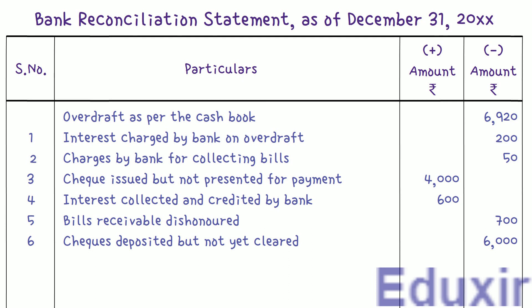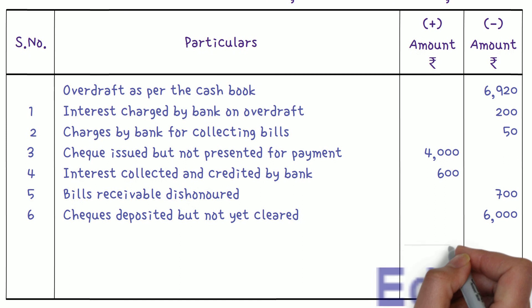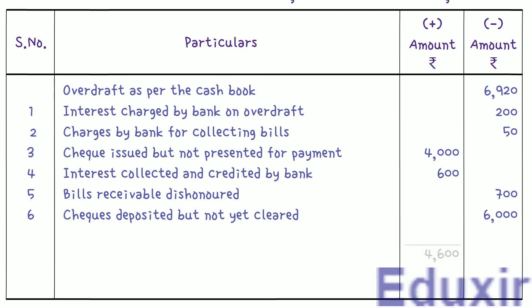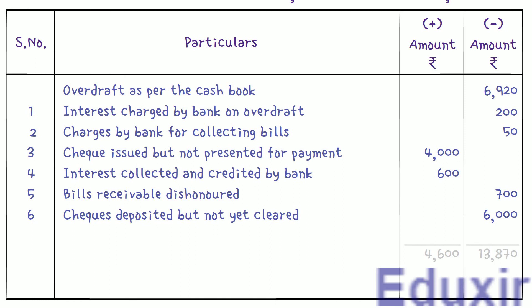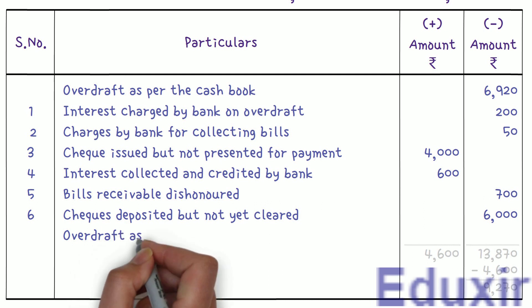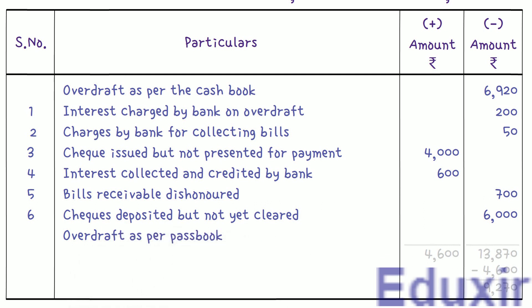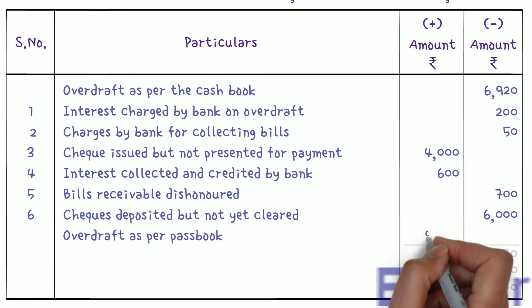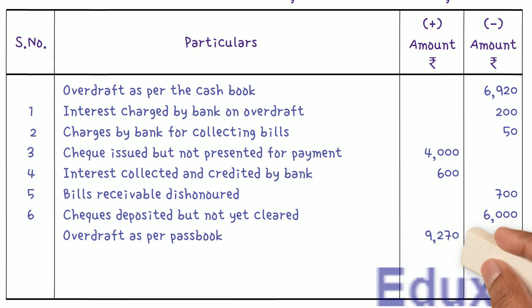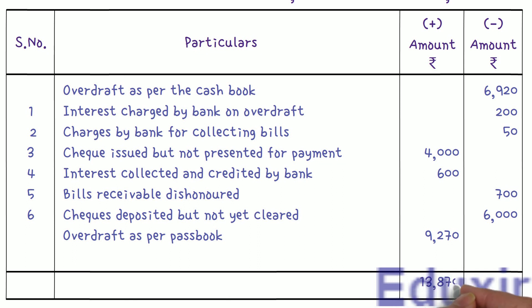We have completed the recording of all the details into the bank reconciliation statement. The next step is to find the balance as per the passbook. The total of all entries in the plus amount column is 4,600 rupees, and the total in the minus amount column is 13,870 rupees. Subtracting 4,600 from 13,870 gives 9,270 rupees. This is the passbook overdraft balance. We write 'overdraft as per passbook' and enter 9,270 rupees in the plus amount column, making both column totals equal to 13,870 rupees.